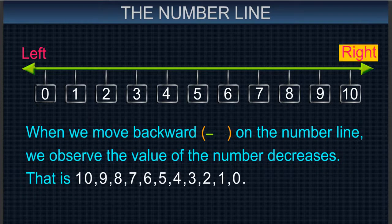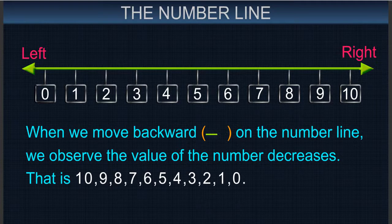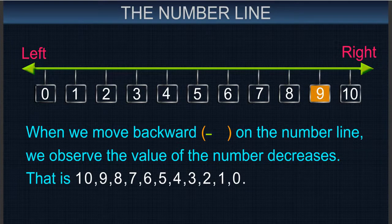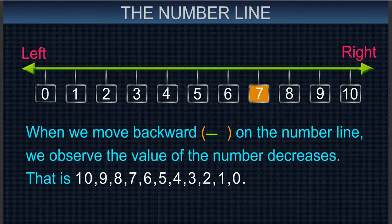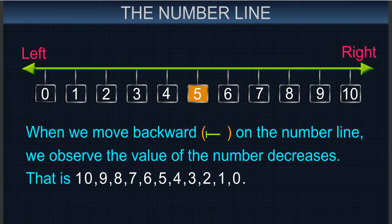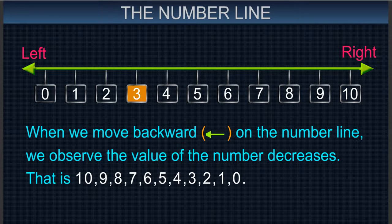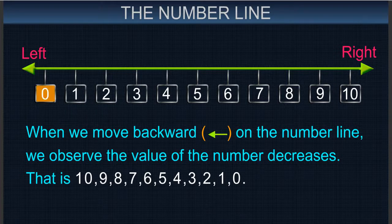When we move backward on the number line, we observe the value of the number decreases. That is 10, 9, 8, 7, 6, 5, 4, 3, 2, 1, 0.